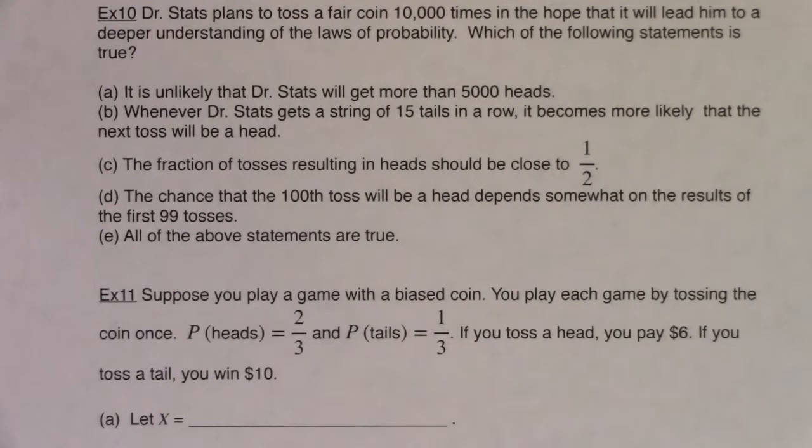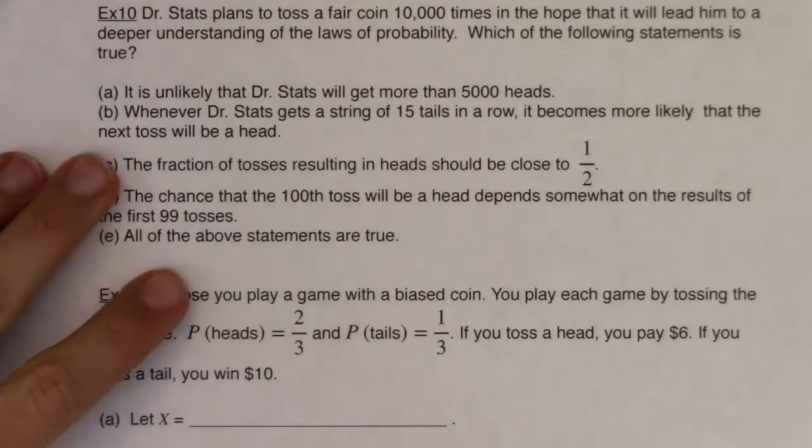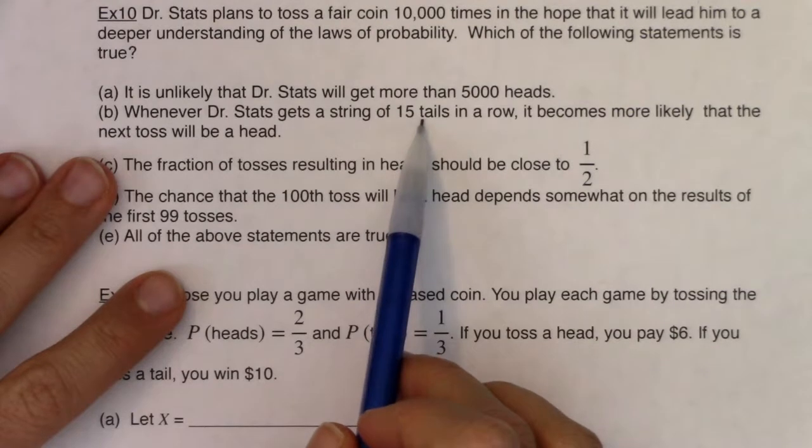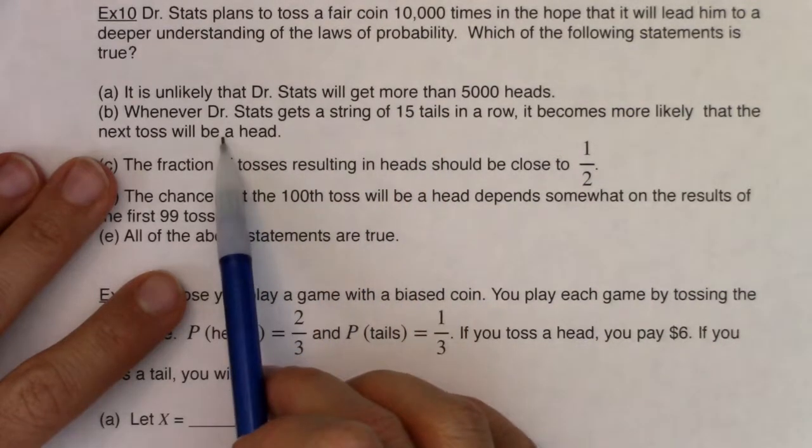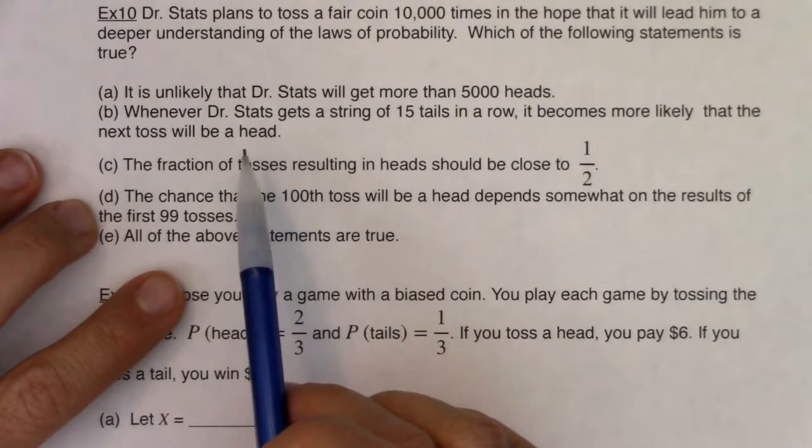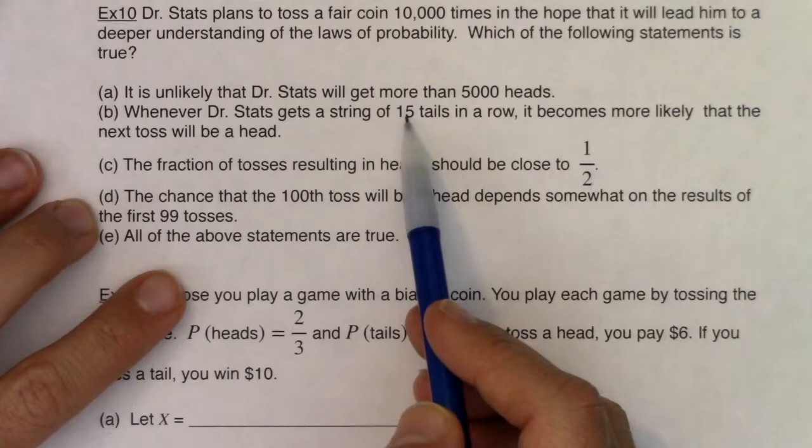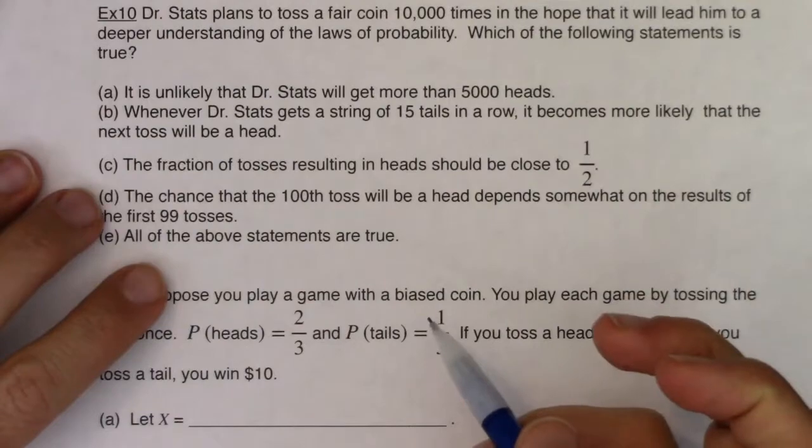In reading those I hope one stands out to you as true and maybe one or two stands out as false. So let me pick apart the first two that are false. Something that I refer to as the gambler's fallacy. Let's take a look at part B. This isn't true when you're tossing coins—these trials are independent of one another. So don't think that because you get 15 tails in a row you are due for a head.